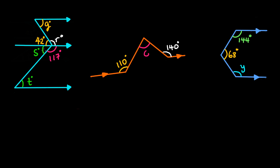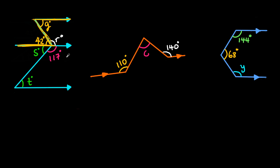We'll start with the first figure. Anytime you are given figures like this and you need to calculate the value of the lettered angles, just look at the diagram very carefully and try to bring out some deductions. For example, you'll notice that we can bring out something that looks like Z. This looks like Z but in the opposite, reverse manner. So because it looks like Z, we apply the alternate angles concept.